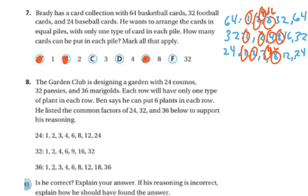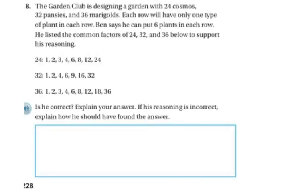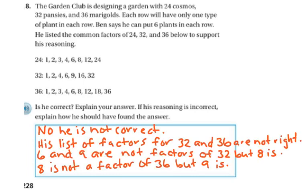The next one says the Garden Club is designing a garden with 24 cosmos, 32 pansies, and 36 marigolds. Each row will only have one type of plant in each row. Ben says that he can put 6 plants in each row. He lists the common factors of 24, 32, and 36 below to support his reasoning. Is he correct? Explain your answer. If his reasoning is incorrect, explain how he should have found the answer.